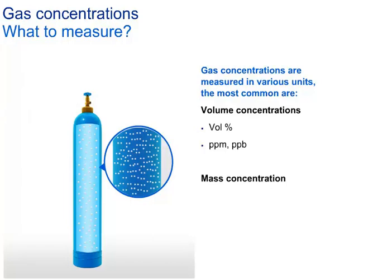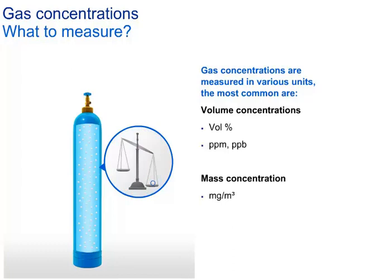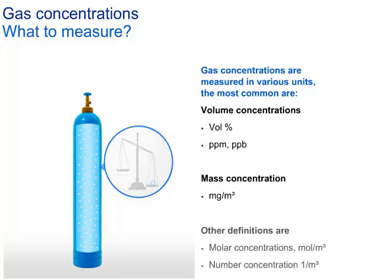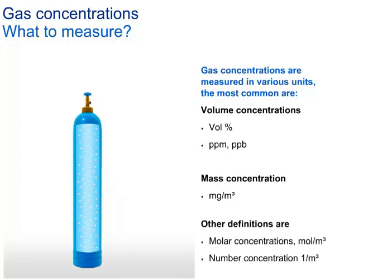Alternatively, gases can be measured in mass concentration. The unit used is milligram per cubic meter, which is a calculation of the molecule's weight in a fixed volume of one cubic meter under defined conditions, because the number of molecules differs in relation to temperature and pressure. Other definitions are molar concentrations — mole per cubic meter — or number concentration per cubic meter.